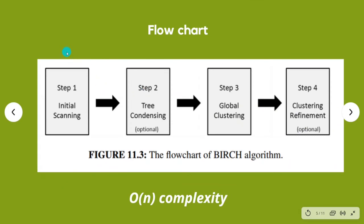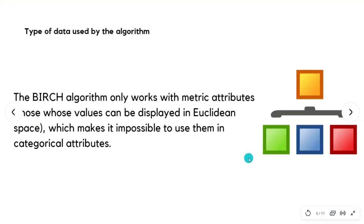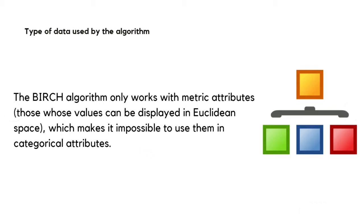This is the flowchart of the BIRCH algorithm. It is easier to define the algorithm by its phases, two of which are optional, although recommended. As you can see, the algorithm only scans the dataset once, so its computational complexity is O(n). Talking about the types of data handled by the algorithm, it only works with numerical or metric data, which can be visualized in Euclidean space — the distance in a Cartesian plane. Categorical attributes or values are out of the equation.